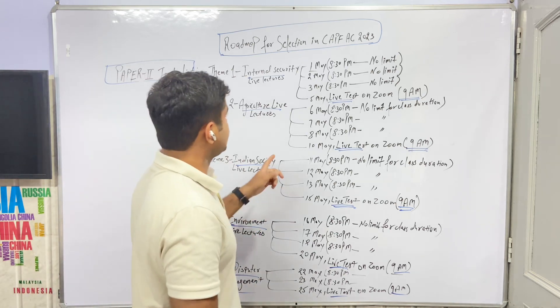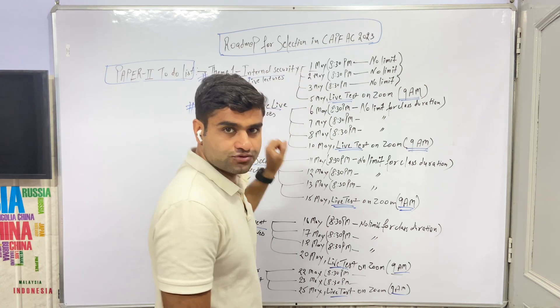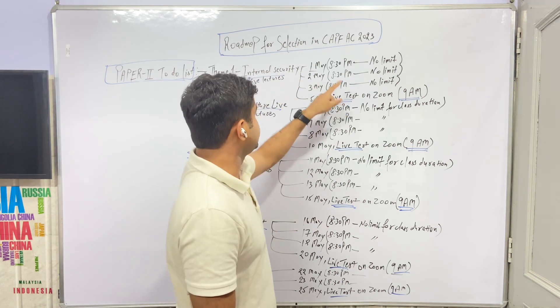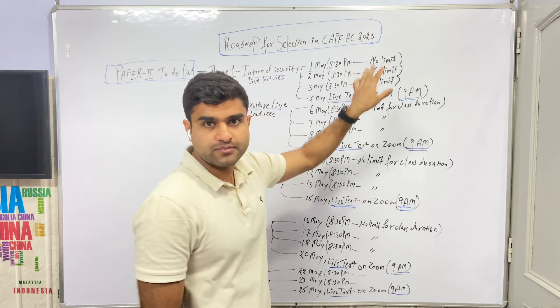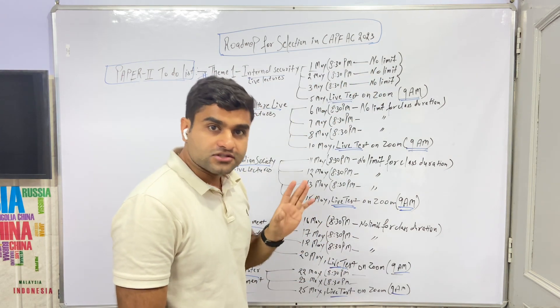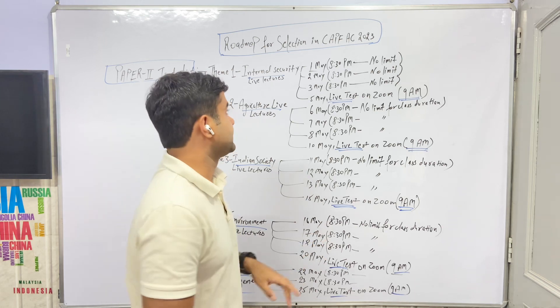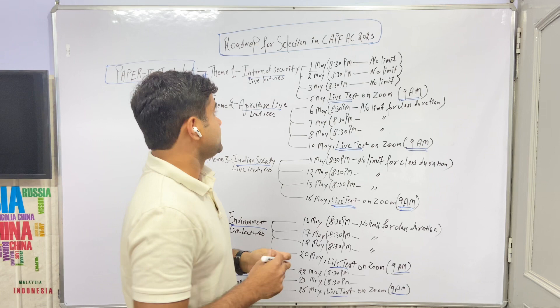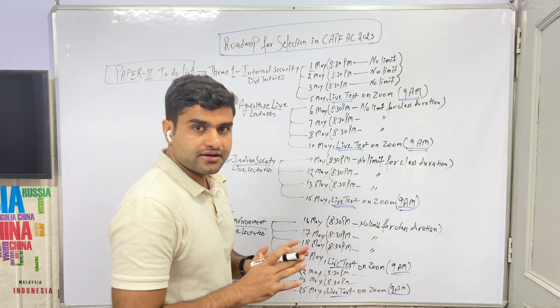In internal security you will have 3 live classes. In 5 themes you will have a live test. The syllabus is very vast, so we will have to finish it. On average you will have 2 weeks of classes or less. Then you will have to prepare yourself.